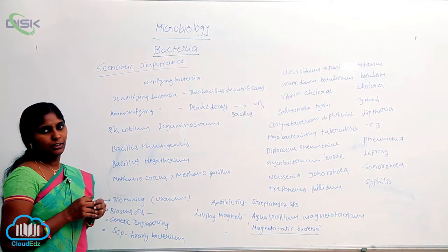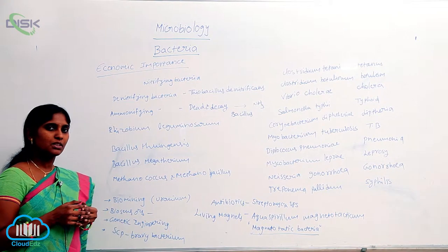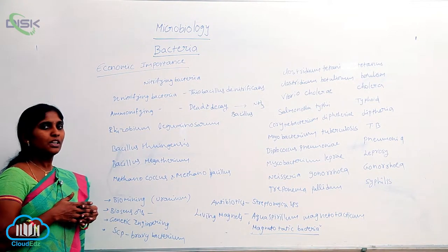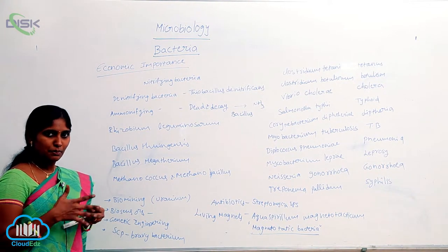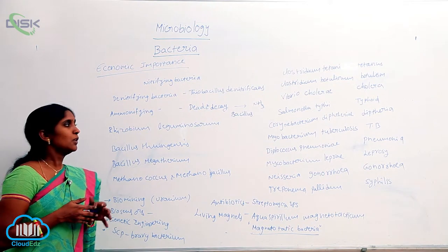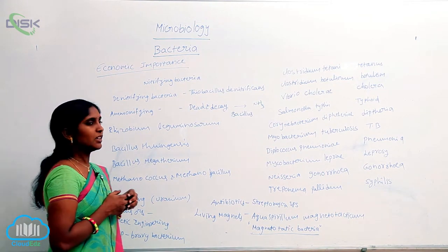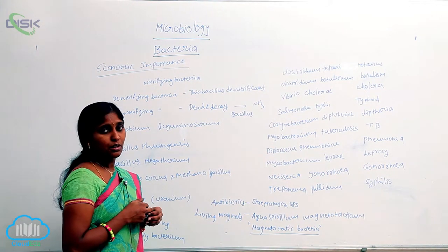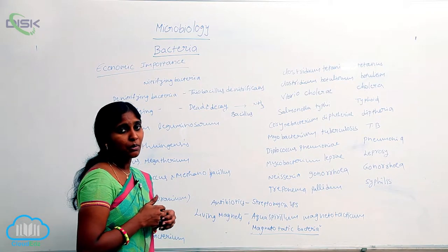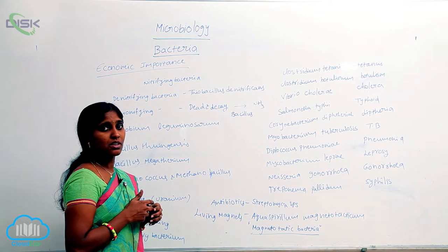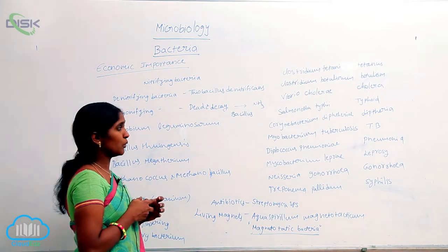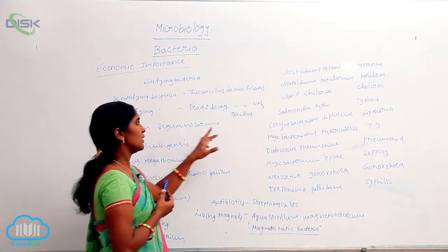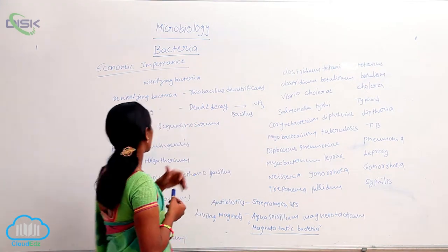Ammonifying bacteria are associated with the dead and decaying matter of living organisms — plants and animals — which are rich in proteins and amino acids. These proteins and amino acids are decomposed and oxidized into ammonia in the presence of ammonifying bacteria, such as Bacillus.